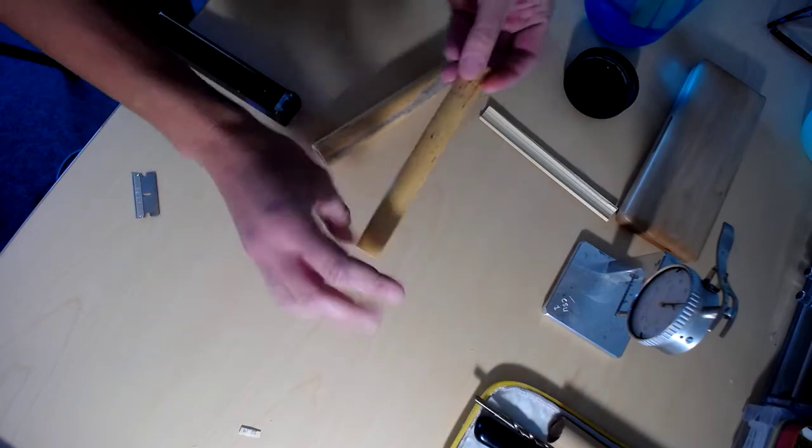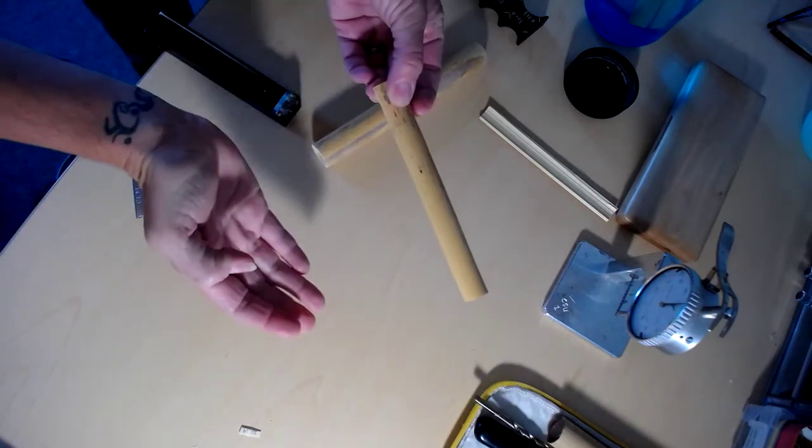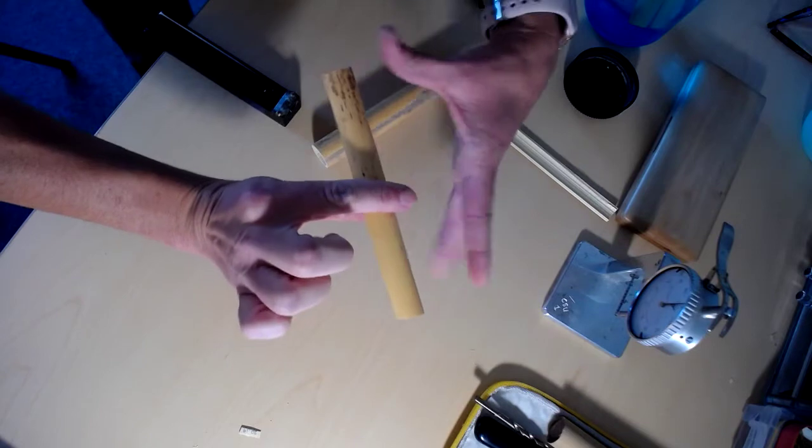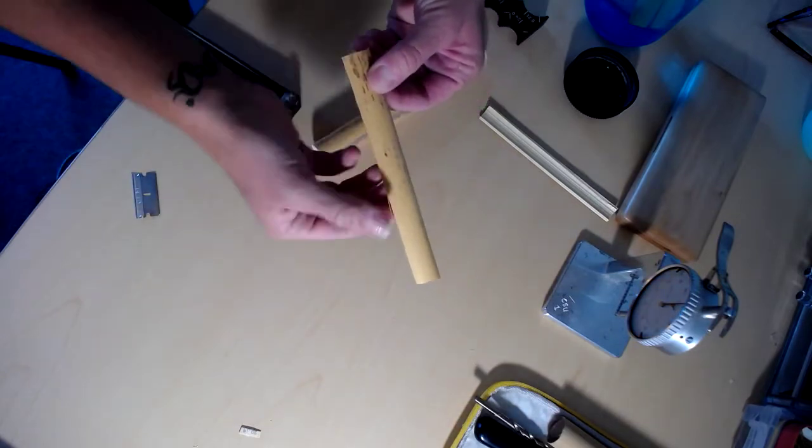We want to have something that is symmetrical, both in terms of what will eventually be the top and bottom blade. So if you can imagine me folding this in half, I want this half to be the same as this half in terms of strength.